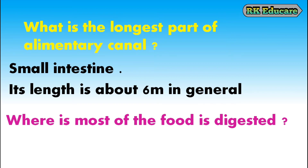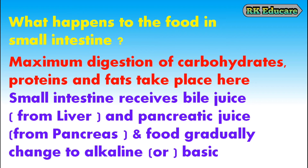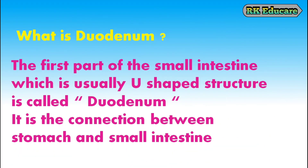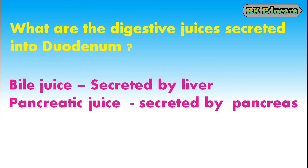Where is most food digested? Most of the food is digested in the small intestine. Maximum digestion of carbohydrates, proteins and fats takes place in the small intestine. The small intestine receives bile juice from the liver and pancreatic juice from the pancreas, and food gradually changes to alkaline or basic. What is duodenum? The first part of the small intestine, which is usually a U-shaped structure, is called duodenum. Bile juice and pancreatic juice are the digestive juices secreted into the duodenum.